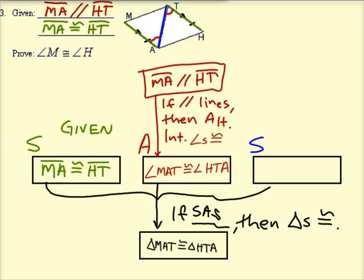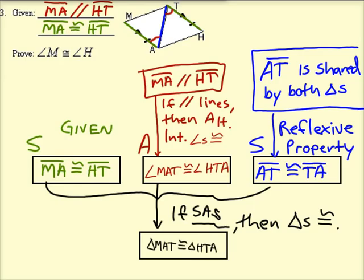So I know it's a bit abbreviated, but that reason, the connector with the arrow says, if parallel lines, then alternate interior angles are congruent. And then finally, we have the blue sides. We have segment AT and it's a shared segment. And shared segments are always congruent.